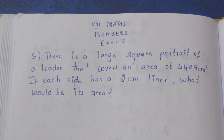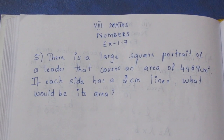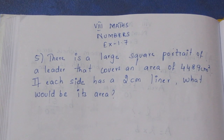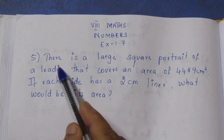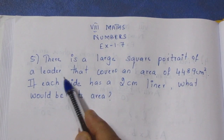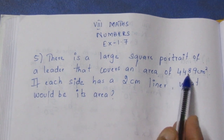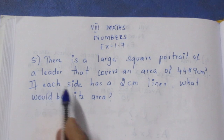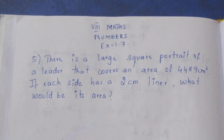Hello viewers, I am Aikli. In the 8th class math numbers exercise 1.7, 5th sum. There is a large square portrait of a leader that covers an area of 4489 cm square. If each side has a 2 cm liner, what would be its area?